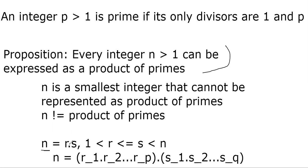So n must be product of some numbers. I didn't say r and s are primes at this point. I said n is product of two numbers r and s. And therefore, r and s must be bounded by n. But remember,